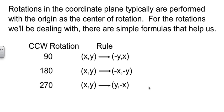270 is going to be y negative x. And then here's the tricky question that they sometimes throw at you, what about 360? Well, if you go 360 degrees around, you're right back where you started, so xy would go to xy.